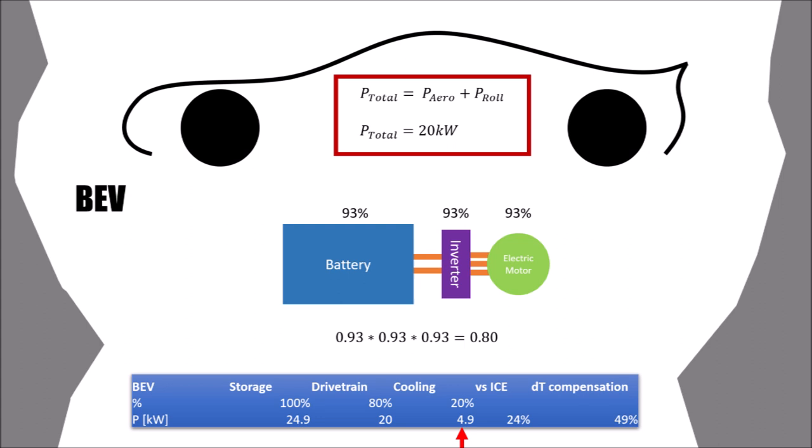So compared to the ICE drivetrain, the electric car only needs 25% of cooling. But now we have to remember what we learned in the first part about the temperature levels. Because the electric car is running at much lower temperatures, cooling performance is only half, which means that we need to double the radiator size to compensate for that, assuming that k stays the same. So in summary, the electric car only needs half the cooling of an ICE car for doing the same thing.